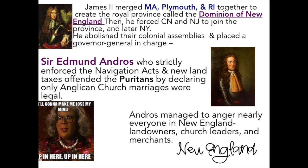King James abolishes their colonial assemblies — the town meetings and self-governing bodies — and places all of them under the charge of a man named Sir Edmund Andros. Sir Edmund Andros enforces all of the Navigation Acts, which angers the colonists, and imposes new land taxes. He goes further and offends the Puritans by saying that only marriages recognized in the Anglican Church are legal — a major problem since the Puritans had broken away from the Anglican Church.